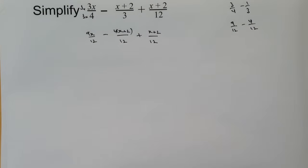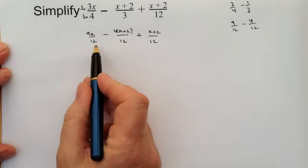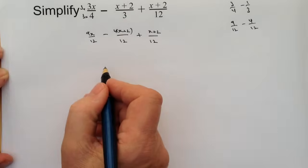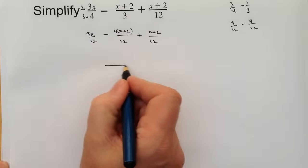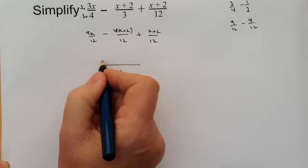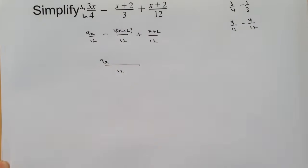We're in a position now where we need to tidy all of this up and make it look more presentable. I know that the bottom number is 12 for all of them, so I'm going to keep that as over 12 for everything. The first one is 9x, that's fine.